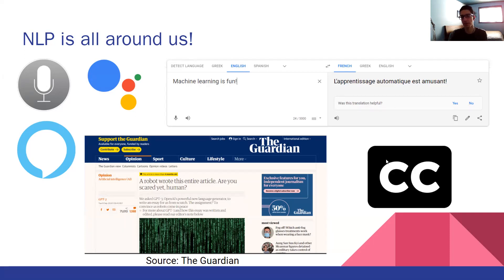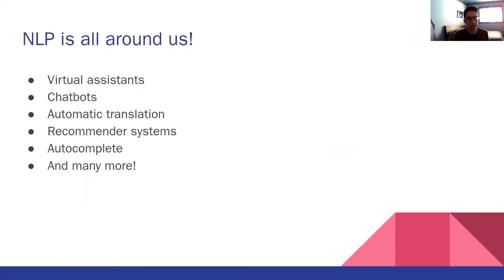Another very common application is closed captioning, which you'll see on YouTube videos where they're able to take speech input and automatically produce the corresponding text. This doesn't always work perfectly, but it's gotten pretty good over the last few years. Other examples include virtual assistants, chatbots, automatic translation systems, recommender systems, and autocomplete on your phone — which takes into consideration the most recent words you typed and tries to predict what the next words will be. That's actually solving a particular NLP task called language modeling, which we'll get into later.